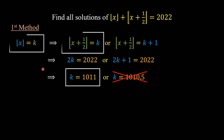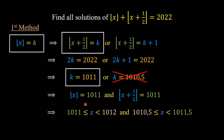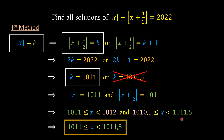Because we already have that the floor value of x equals k and the floor value of x plus one-half equals k, both equal 1011. By the definition of the floor value, x is between 1011 and 1012, and x is between 1010.5 and 1011.5. Since x satisfies both inequalities, x is between 1011 and 1011.5. And there we get the solution from the first method.